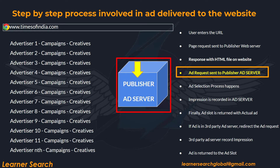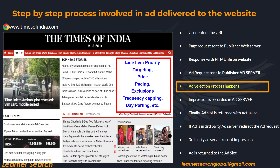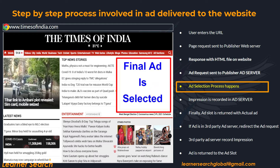Inside the ad server, there are thousands of advertisements which were already uploaded for various advertisers and campaigns. The ad server has to choose only one ad to deliver among thousands of matching ads. Using an ad selection algorithm, and by considering various parameters like targeting, price, item priority, pacing, frequency capping, day parting, exclusions, etc., the ad server selects a matching ad to serve along with external images or scripts.